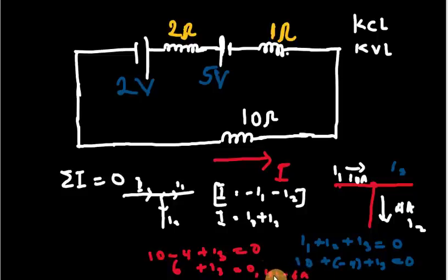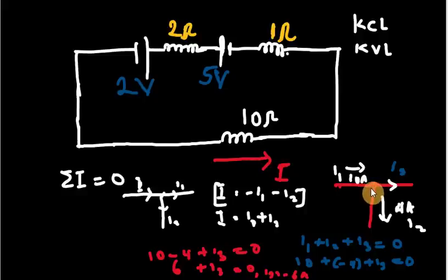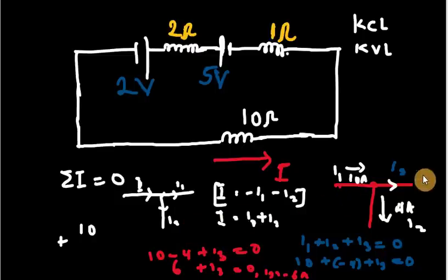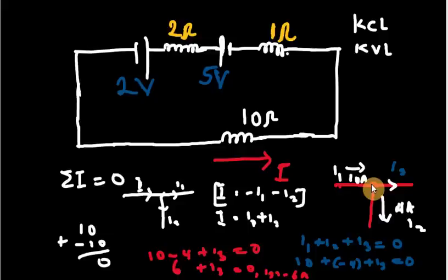Since the current I3 is negative, it shows that it is leaving the junction. The magnitude of the current is 6 ampere and it is leaving the junction. We can verify: the total sum of currents entering the junction is 10 ampere, and the sum leaving is minus 6 minus 4, which is minus 10. Everything sums to zero. This is how to use Kirchhoff's current law to resolve problems.